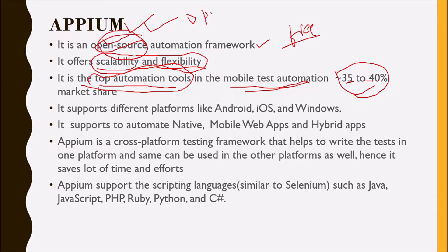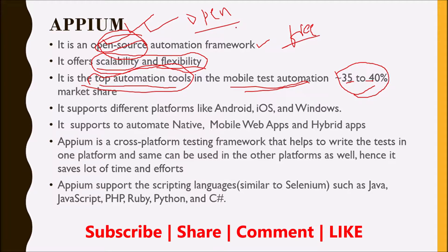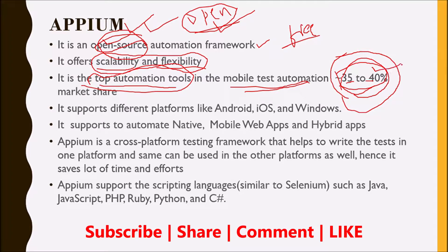Open source is widely getting recognition and everybody is trying to contribute to the open source world, so everybody is encouraged to use open source tools. Hence, most companies operating in the mobile testing space have APM capturing 35 to 40 percent of the share. Another important factor of APM is it supports different platforms — that is one of its main advantages. It supports all three important mobile platforms: Android, iOS, and Windows.